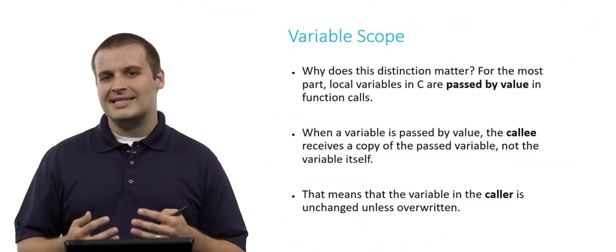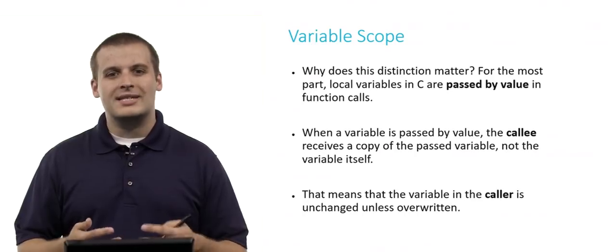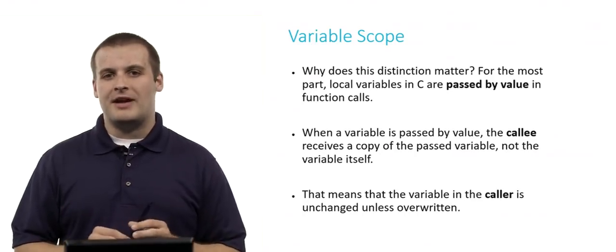Why does this distinction matter? Why do we care whether some variables are local and others are global? Well, for the most part, local variables in C are what's called passed by value when we make a function call. What does that mean?